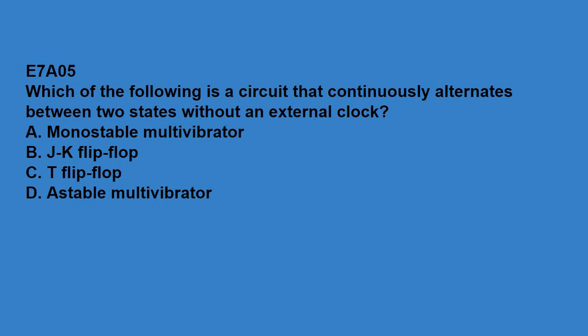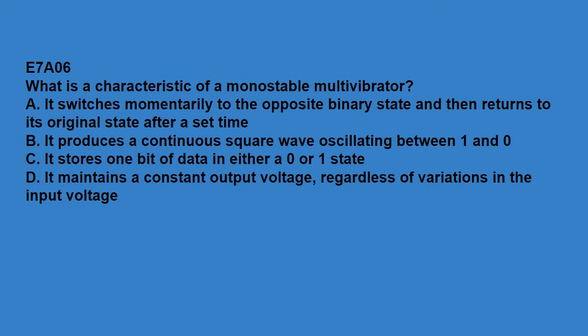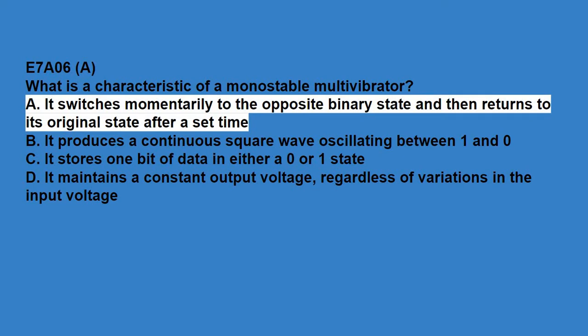E7A04, how many flip-flops are required to divide a signal frequency by four? Answer is two. E7A05, which of the following is a circuit that continuously alternates between two states without an external clock? That answer is astable multivibrator.